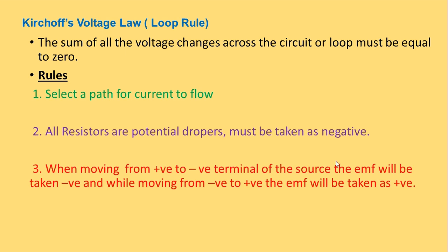Rule number three: when moving from positive to negative terminal of a source, EMF will be taken as negative, because you are moving from positive to negative and potential is dropping. While moving from negative to the positive terminal of a source, the potential must be taken as positive, because there is an increase in potential — we are moving from lower to higher potential.